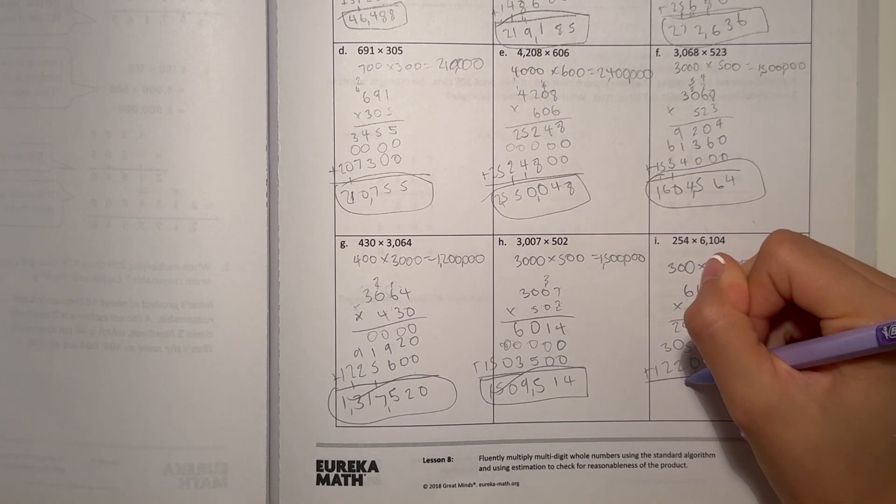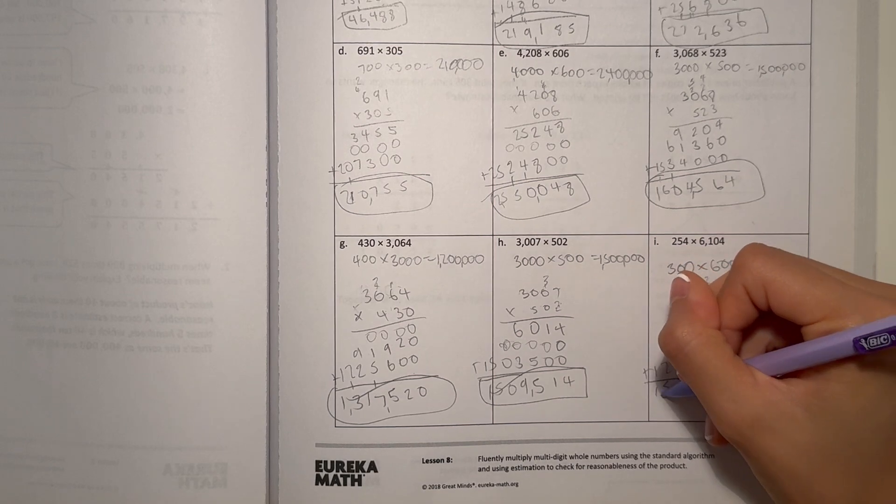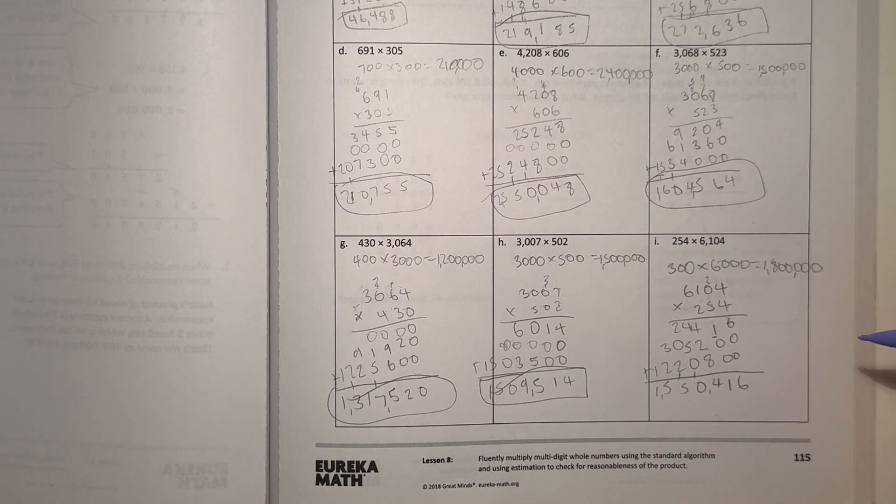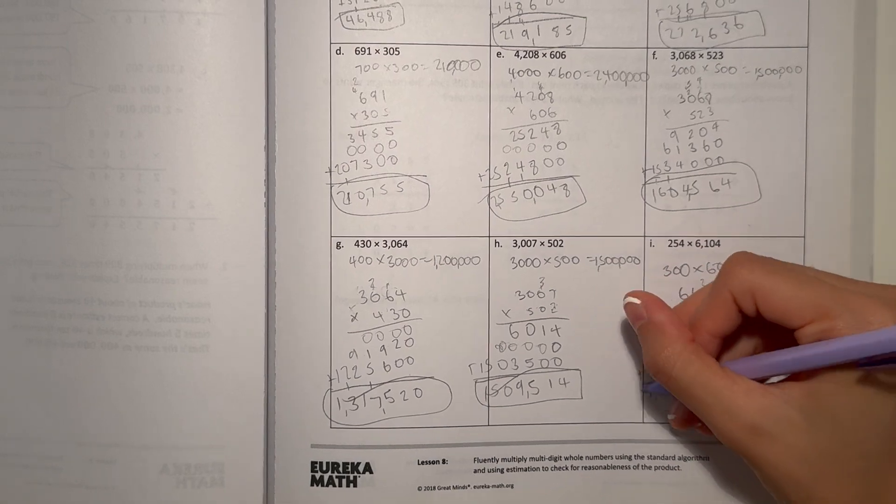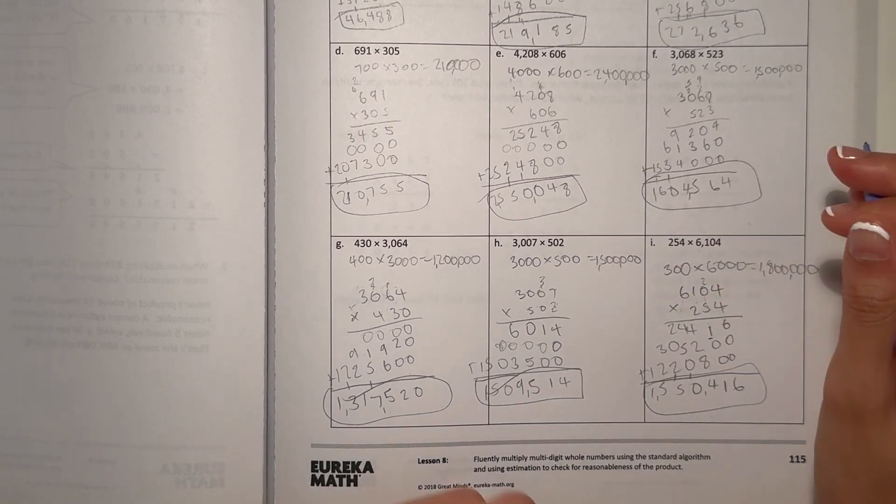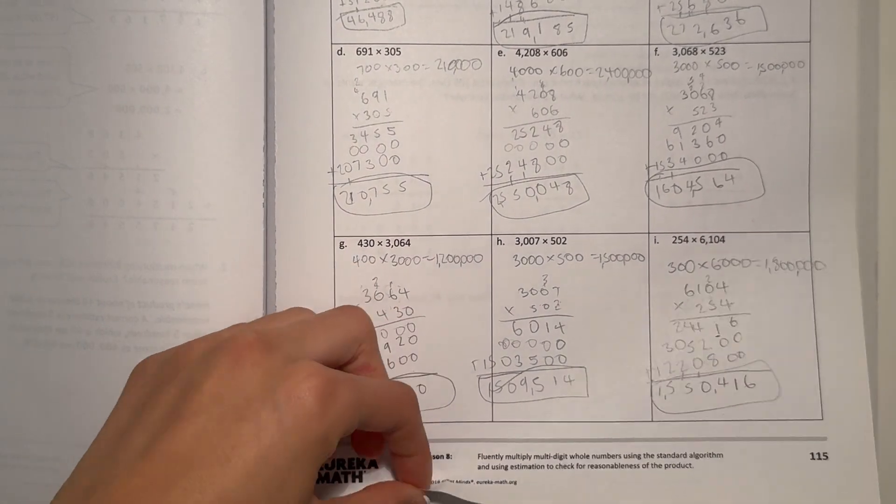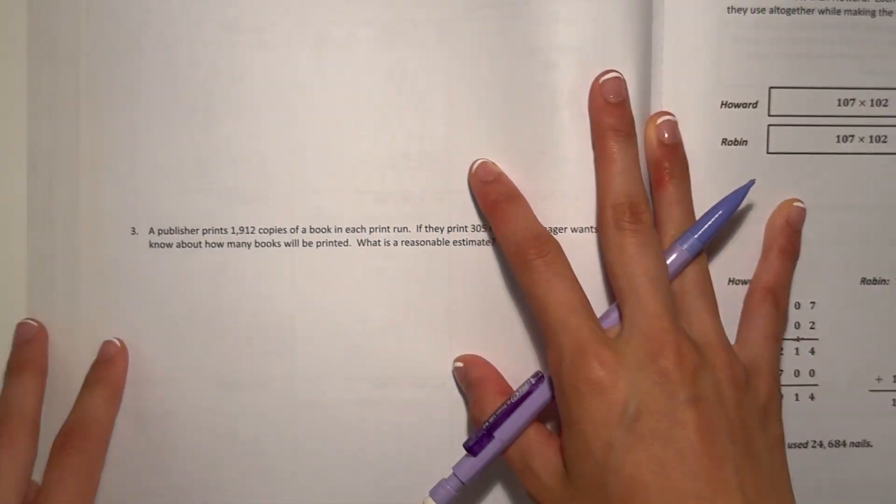So let's add. 14. 1,550,416. So our answer, I think, I guess it's reasonable.